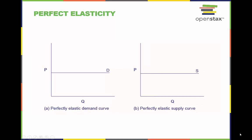The horizontal lines show that an infinite quantity will be demanded or supplied at a specific price. This illustrates the cases of a perfectly or infinitely elastic demand curve and supply curve.